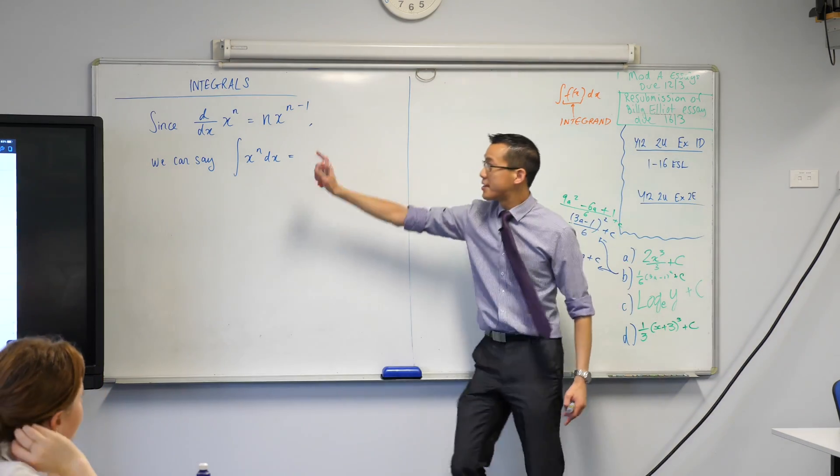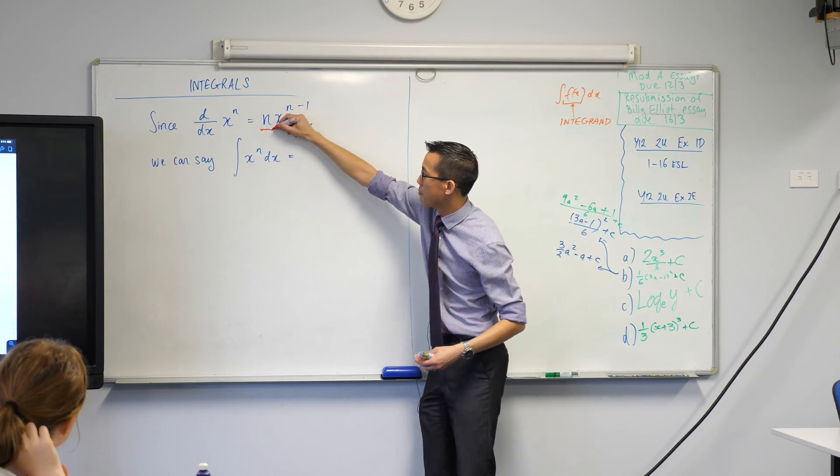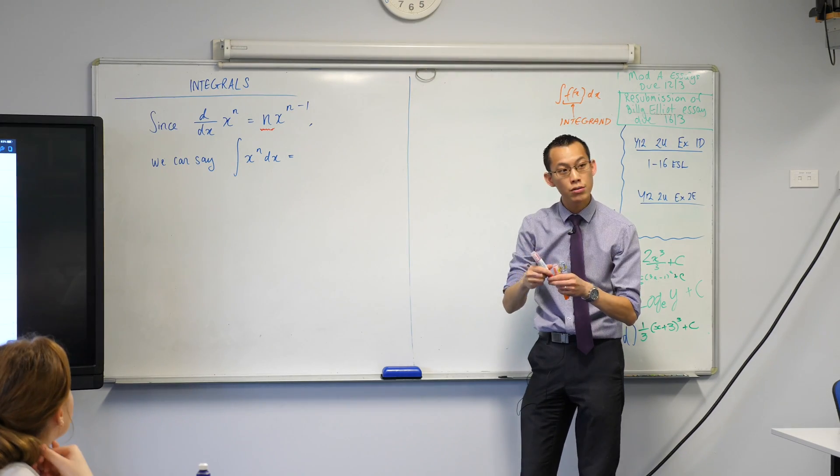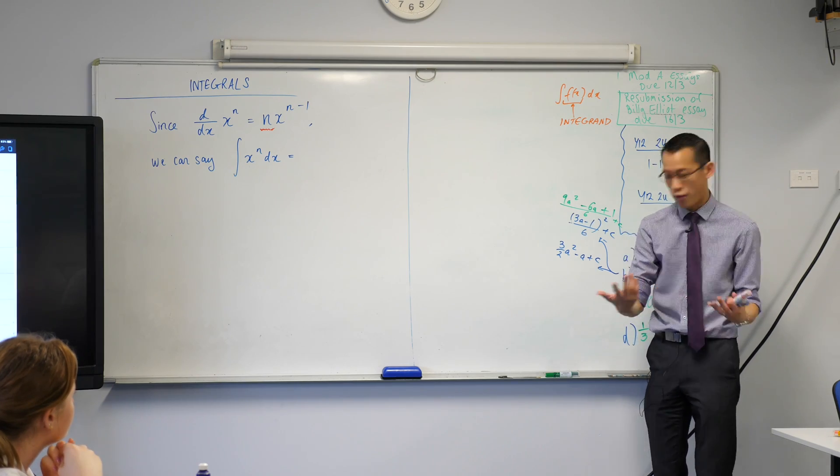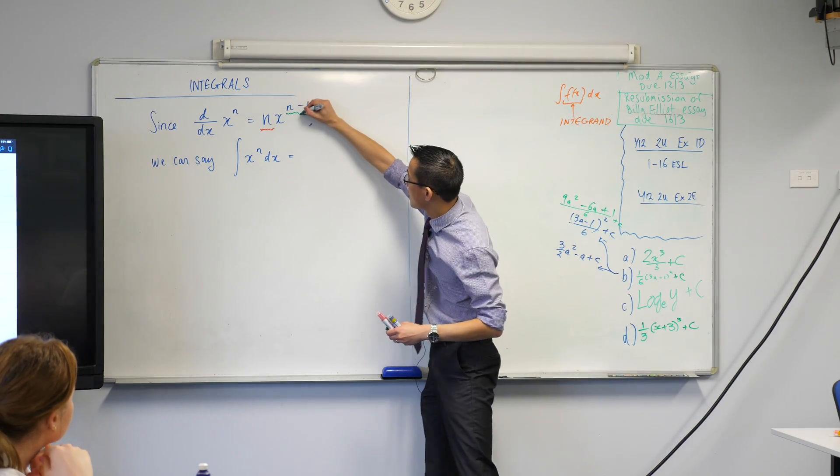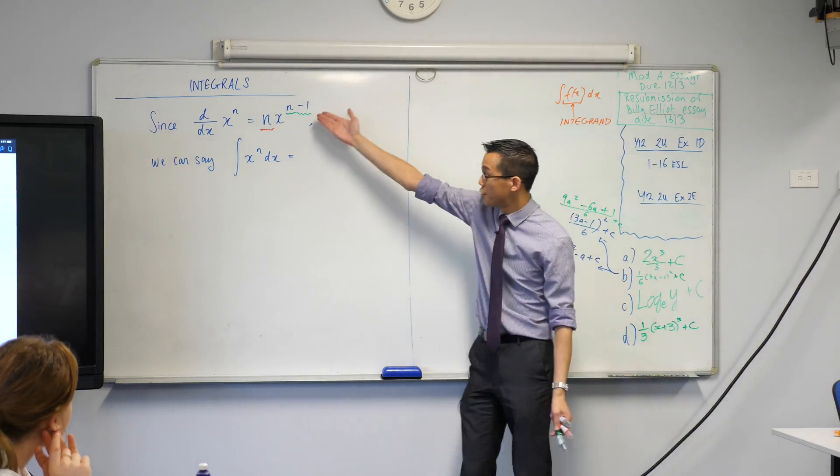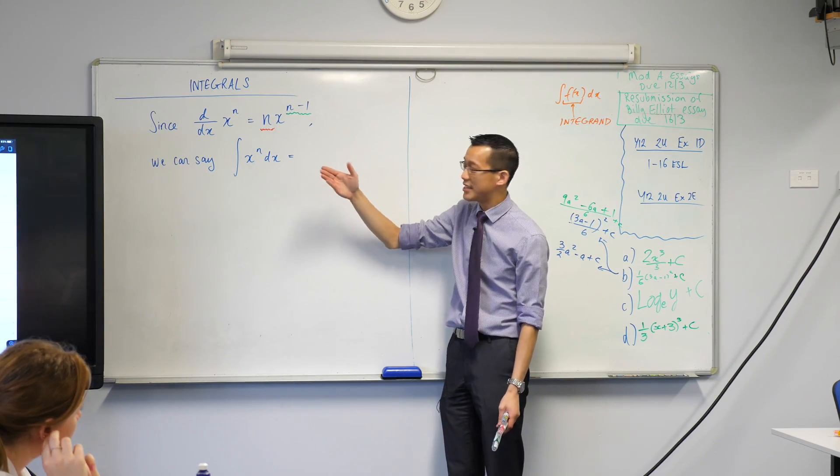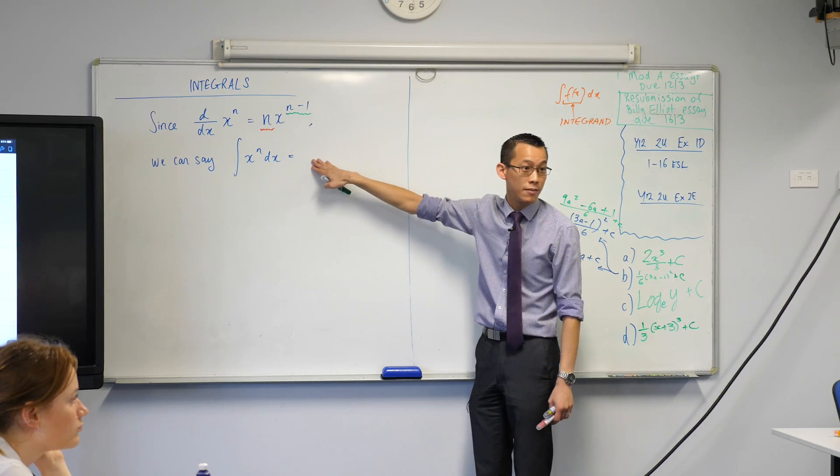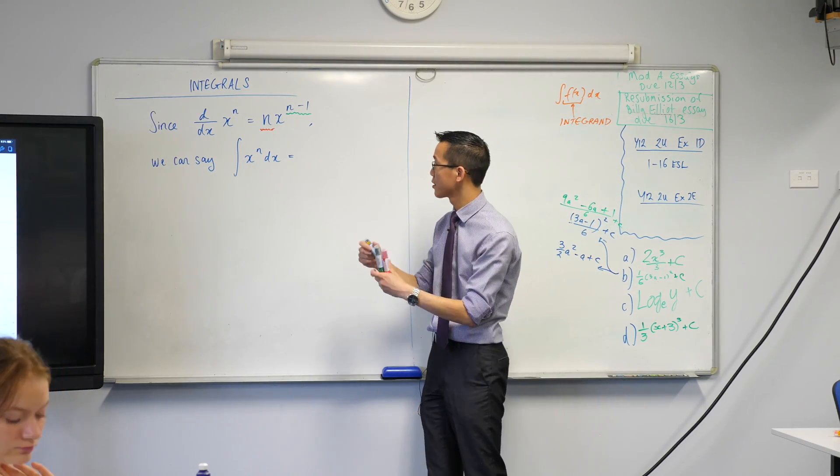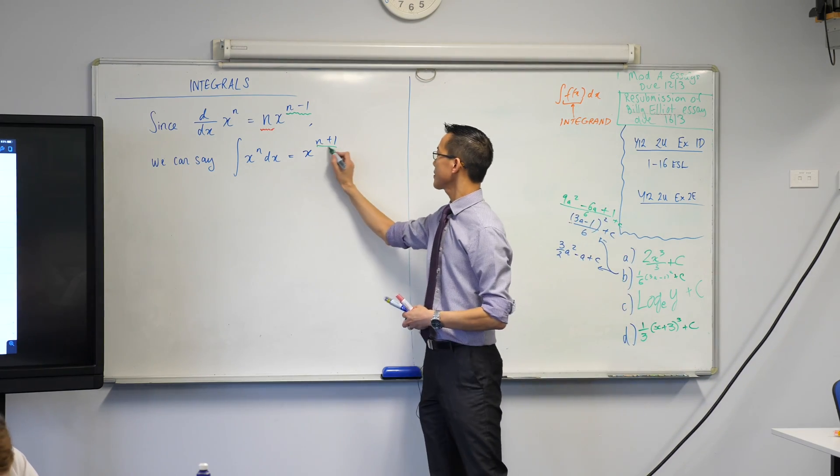Since we know that when you differentiate a power, we do these two things. Number one, we differentiate by bringing that index out the front, and then what's the second thing we do? We subtract 1 from the index, we reduce the index by 1. So there are these two acts here. Therefore, we can say that the opposite of that, to undo that, we undo both of these two actions. So, since the last thing that we did was reduce the index by 1, what's the first thing we should do here? We should do the opposite, which is increase the index. Does that make sense? You see that corresponds? That action there.